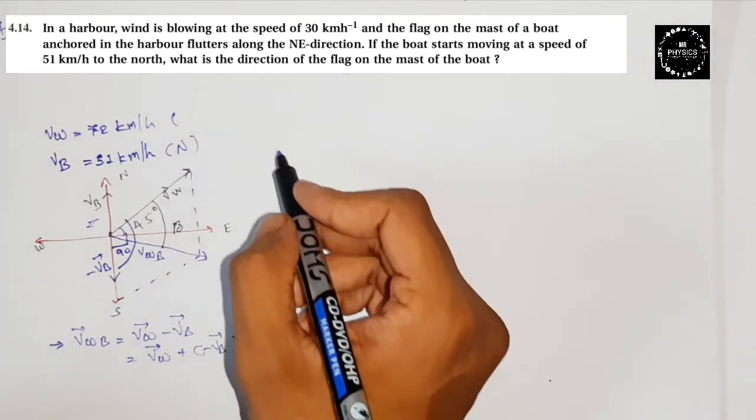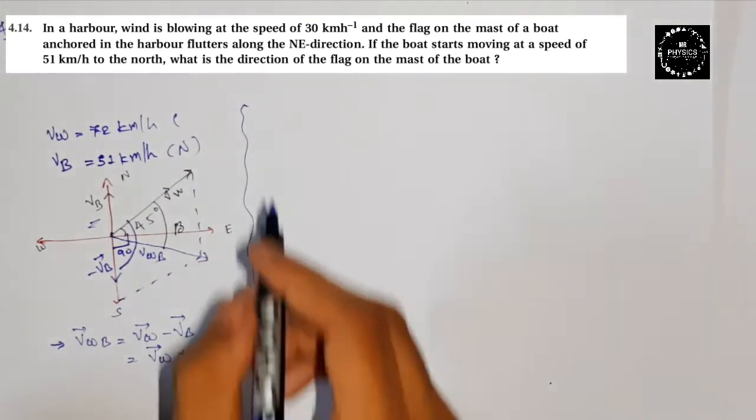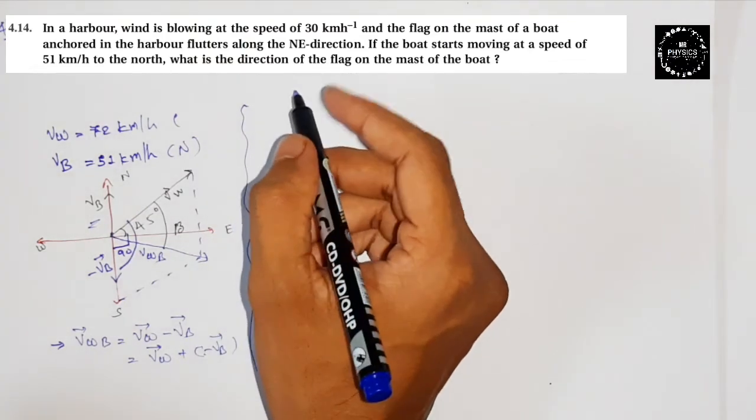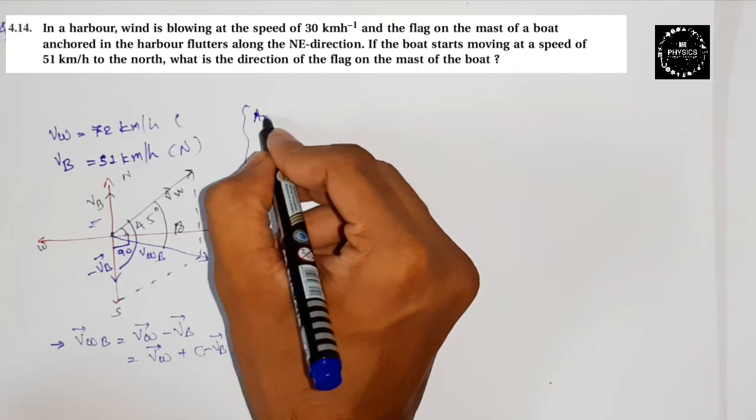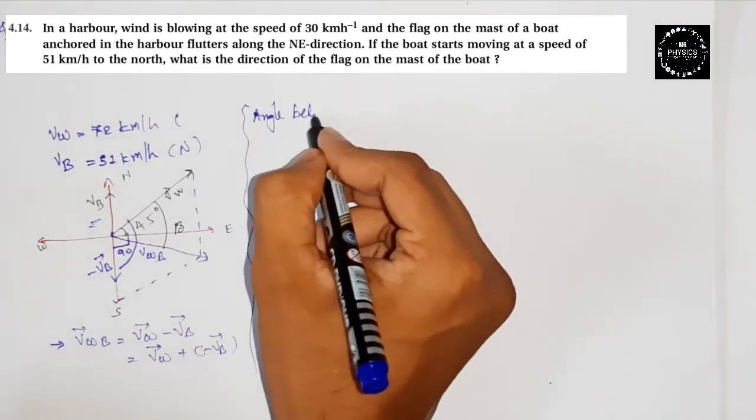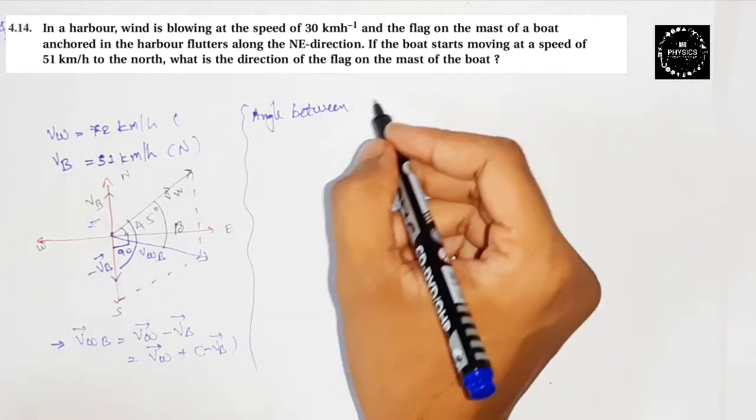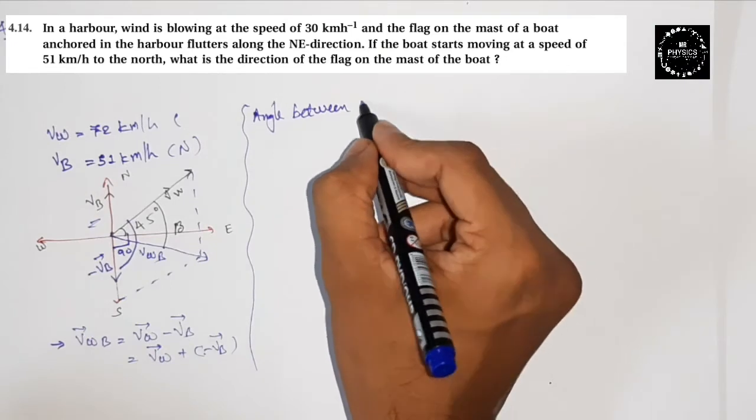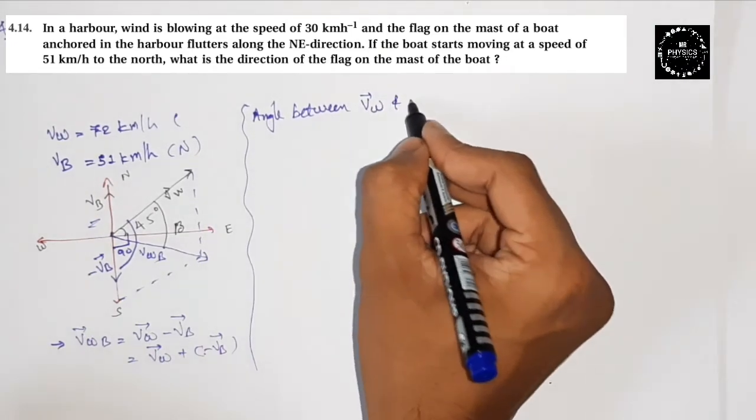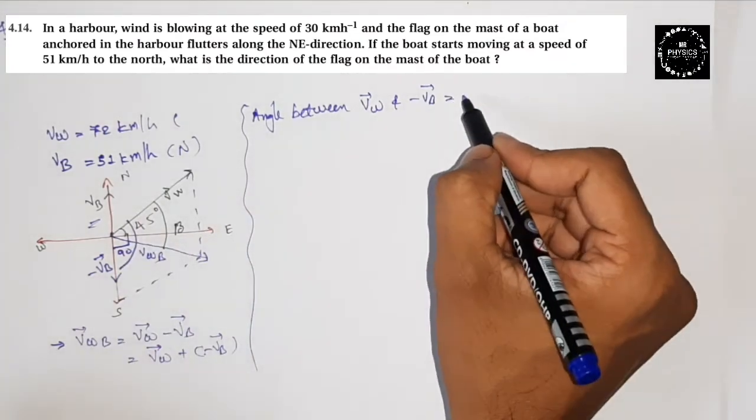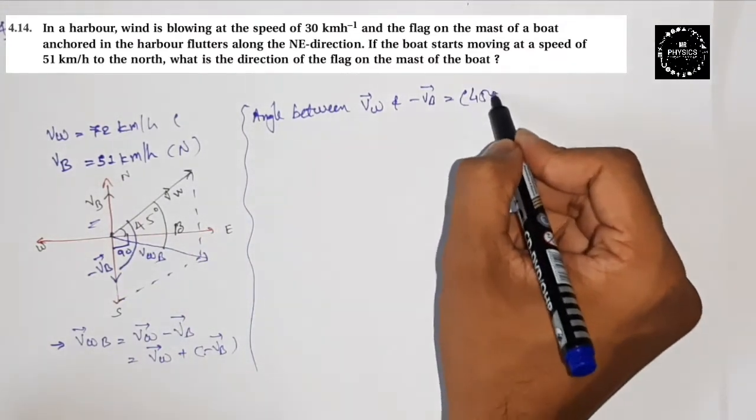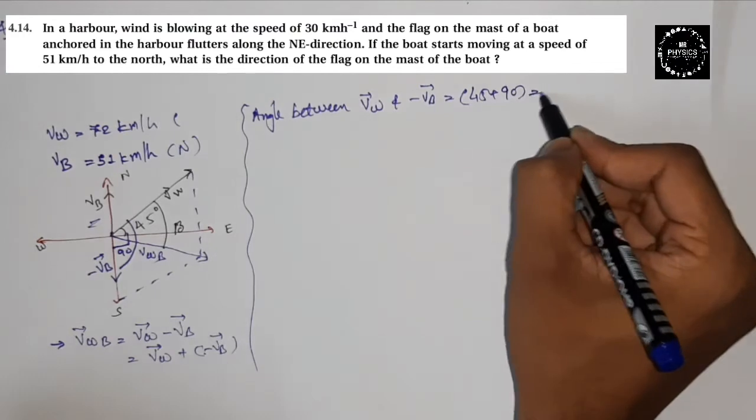So the total will be 45 plus 90, which is 135. So the angle here we can show like this: the angle between V_wind and minus V_b is 45 plus 90, which is 135.